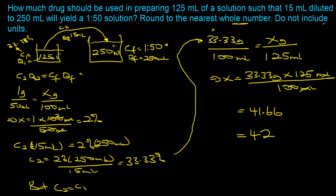This is a tricky question that many students stumble on. The key is having a clear understanding of the physical picture. Once you understand what's happening — the final concentration of 1:250, the volume relationships, and that the stock concentration equals the aliquot concentration but the drug amounts differ — you can quickly solve this type of problem.